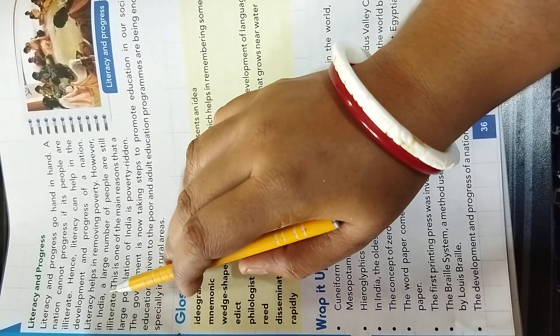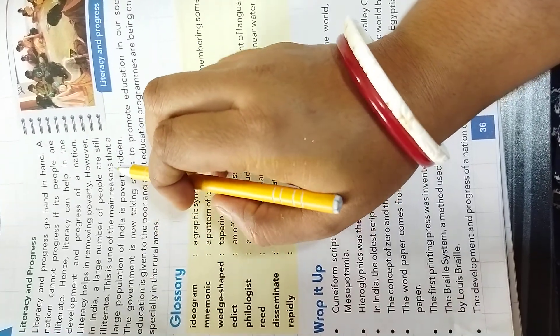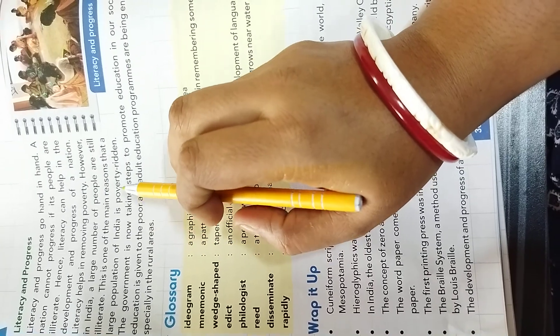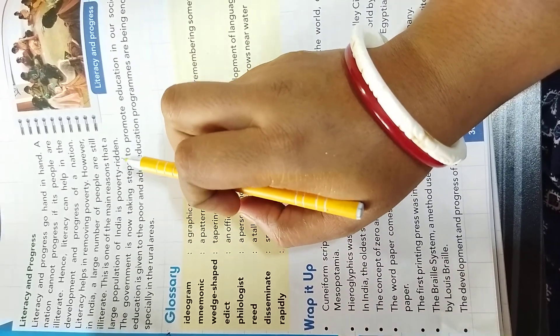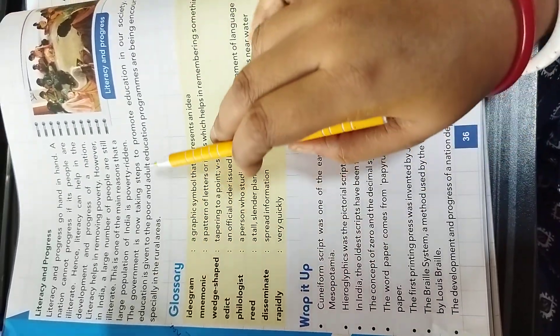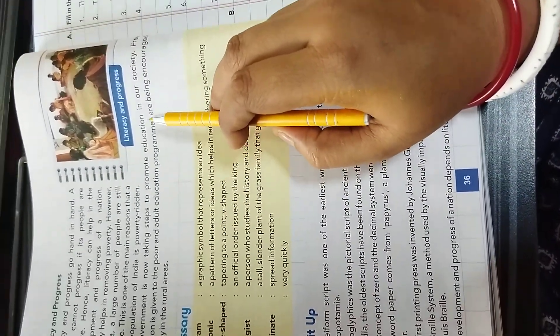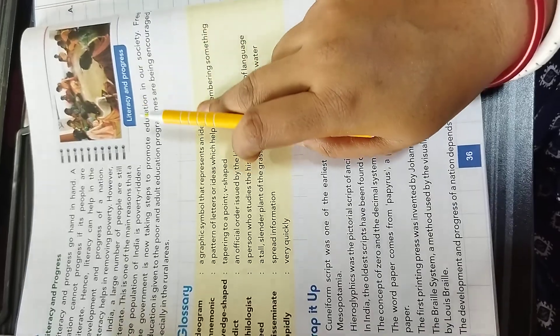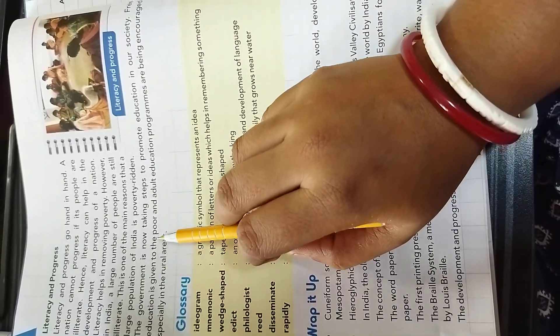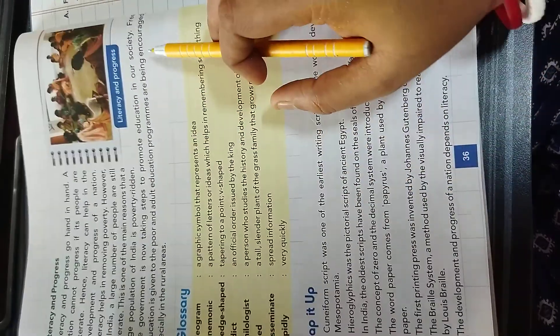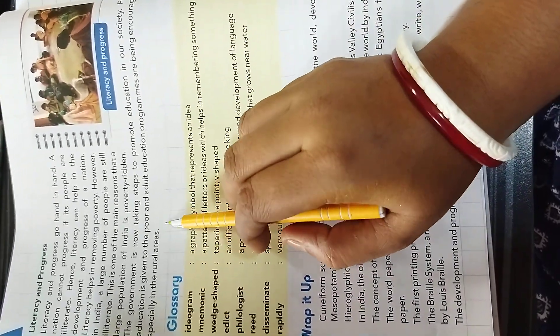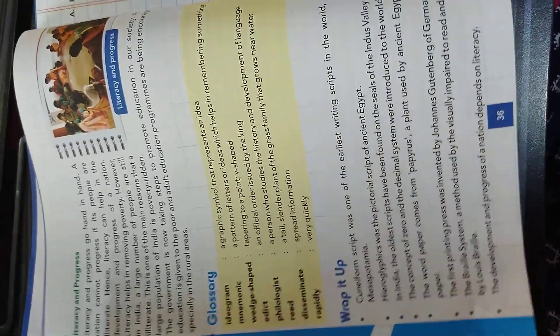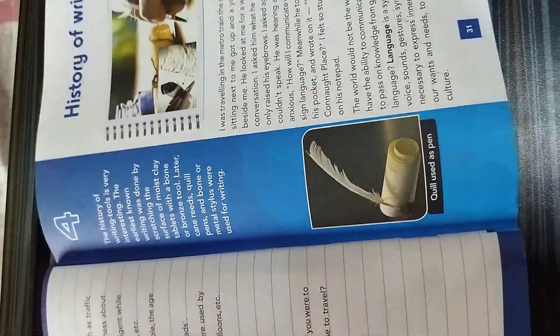However, in India, a large number of people are still illiterate. This is one of the main reason that a large population of India is poverty ridden. The government is now taking a step to promote education in our society. Free education is given to the poor and adult education programs are being encouraged, especially in the rural areas.